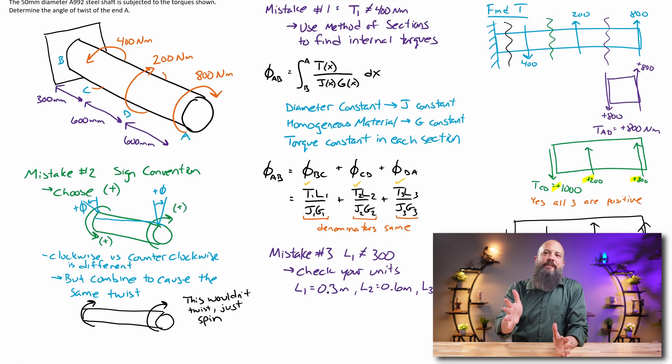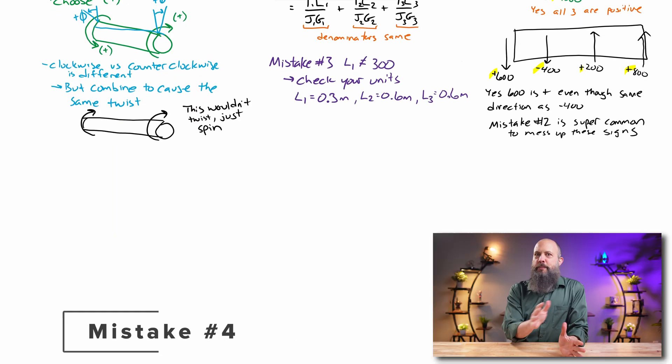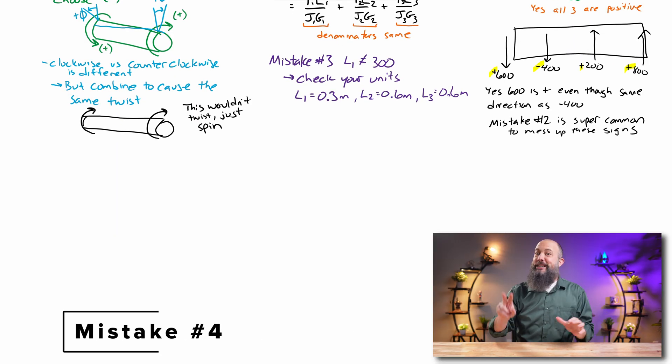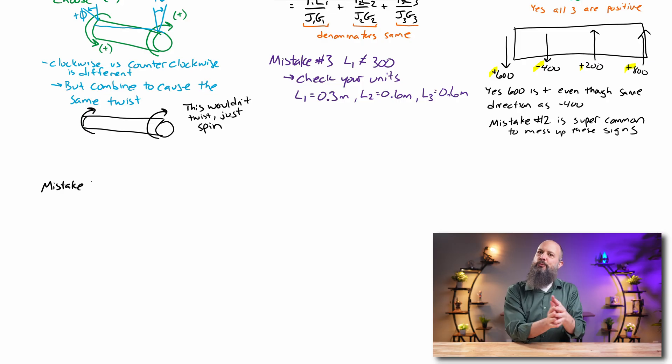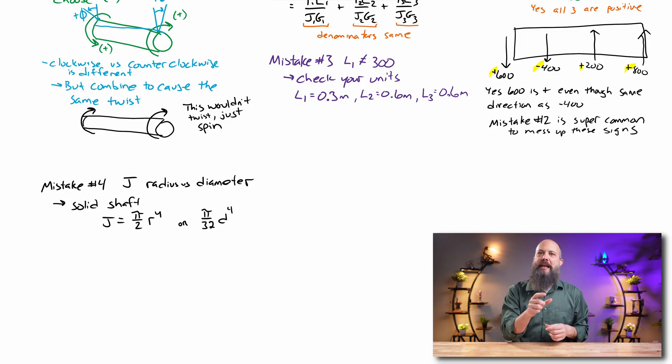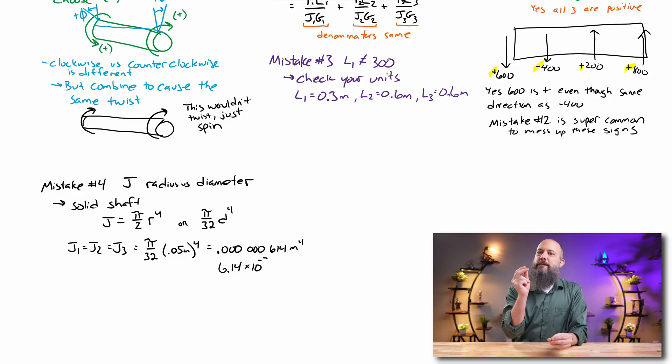Mistake number four: J, the polar moment of inertia. If you, depending on which textbook you look this up in, you're going to see two different versions of this equation, one with a radius, one with a diameter. It's pi over 2 radius to the 4th, pi over 32 diameter to the 4th. So, make sure you use the right one for the number that you're using. For me, I'm using 0.05 meters for diameter, so I'm pi over 32 version, which gets me this 0.0000000614 meters to the 4th.